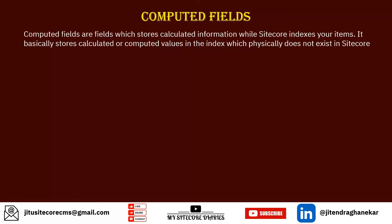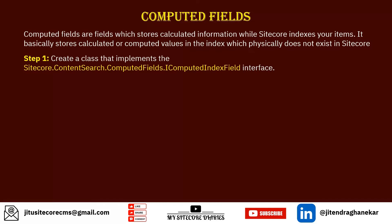If you want to search or filter products by category, there is no direct field for that in Sitecore. In that case you can create a computed field — a calculated or logical field that exists in the index but is not physically stored in Sitecore. That is what computed fields are, and they are very important.